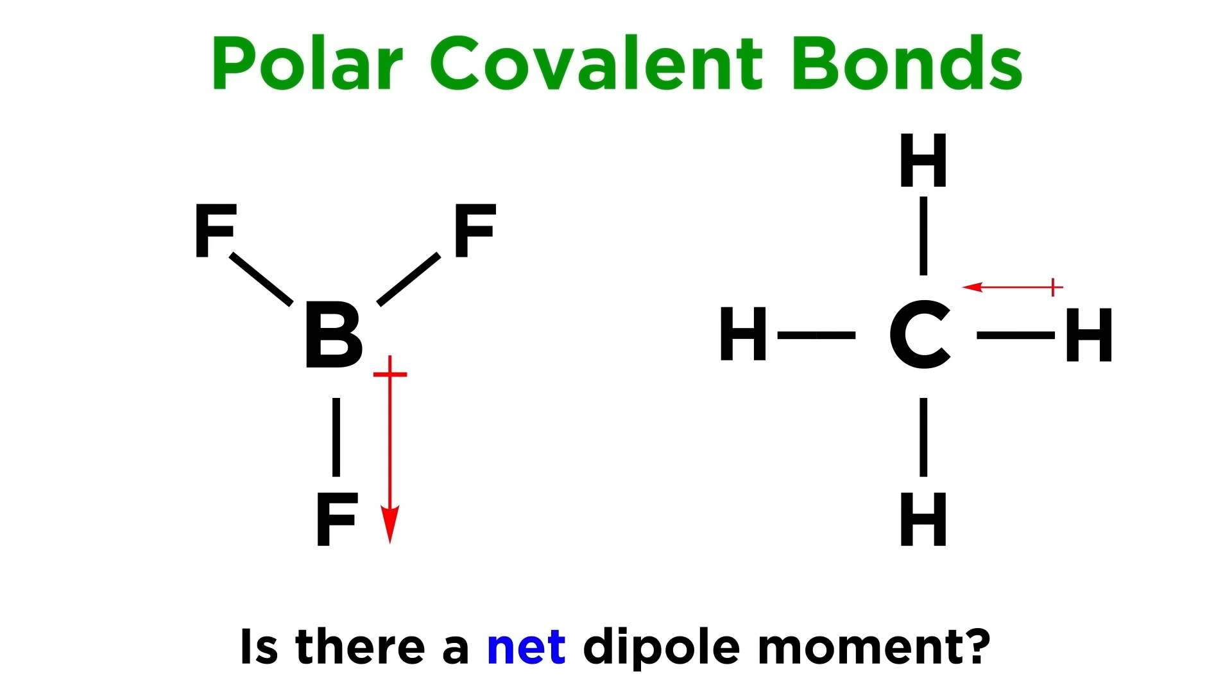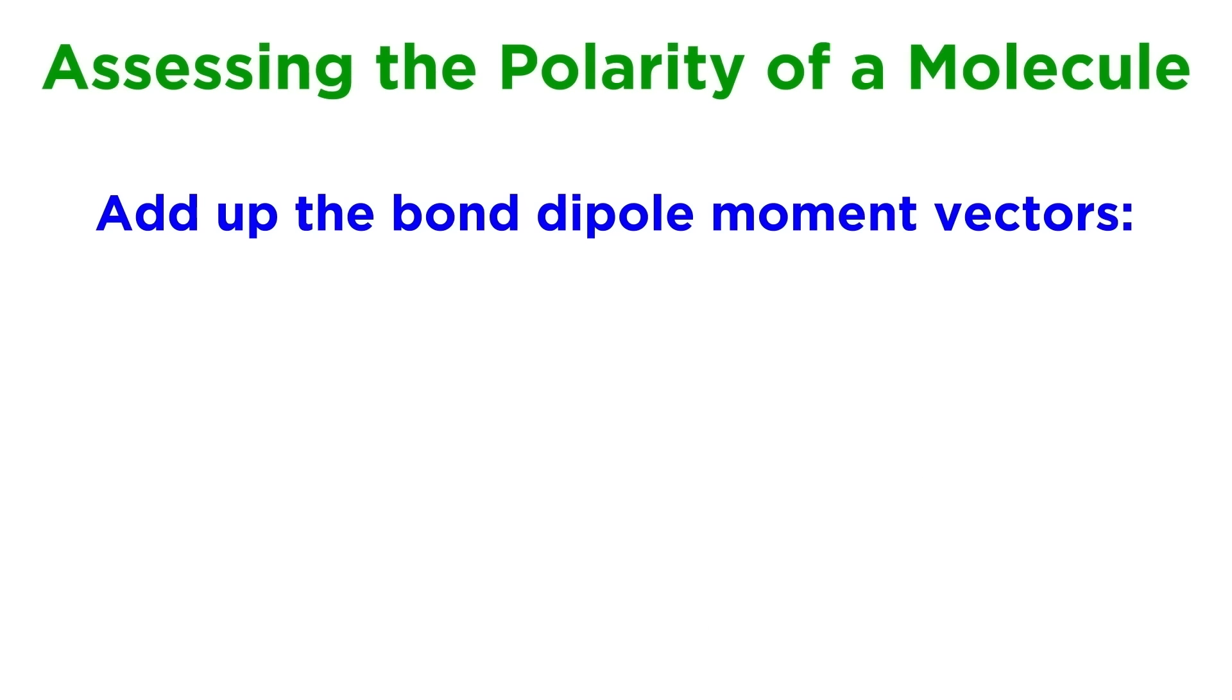But we also want to be able to assess whether a whole molecule is polar or nonpolar, because if it is polar, it will have a net dipole moment. We can find the dipole moment of a molecule by adding up all the individual bond dipole moments. If there is a net dipole, the molecule is polar.